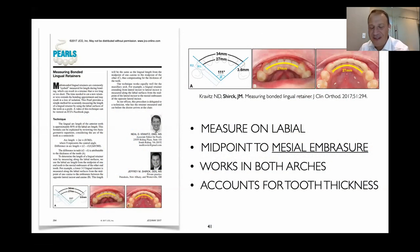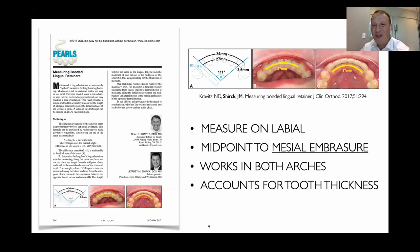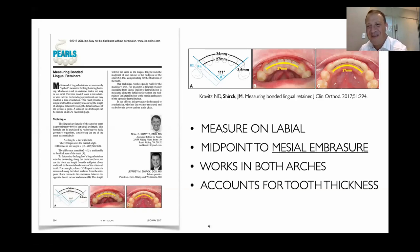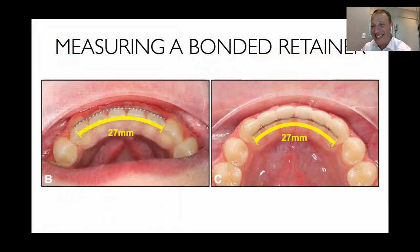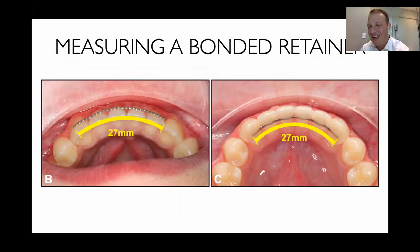A great article from Jeff Shirk in Cincinnati, Ohio, about how to measure a bonded retainer precisely. A lot of staff will eyeball-measure their bonded retainers. What we're doing here is measuring on the labial surface to be used on the lingual — measuring from the midpoint of one tooth to the mesial embrasure of the other tooth, which equals midpoint to midpoint on the lingual. This way your staff member can measure it precisely every time, measure on the labial so you don't interfere with the etch. Great pearl from Dr. Jeff Shirk.